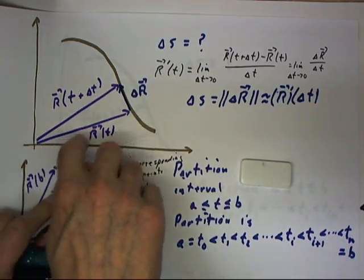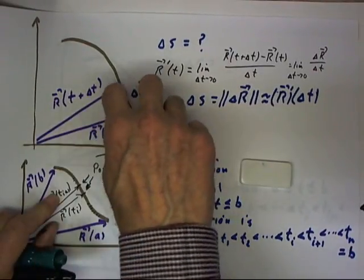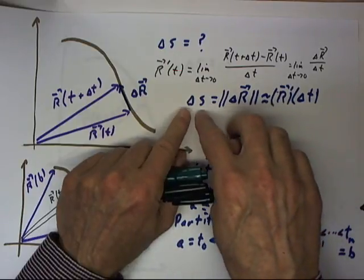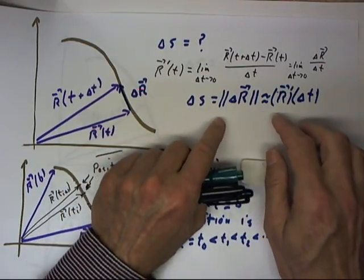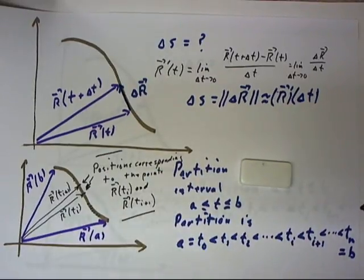We've seen that the distance traveled between the r of t and r of t plus delta t positions can be written approximately as delta s equals the magnitude of delta r times delta t.